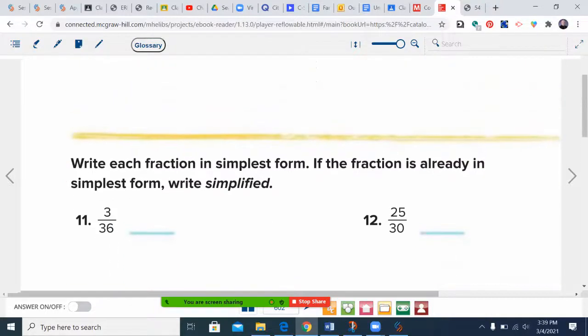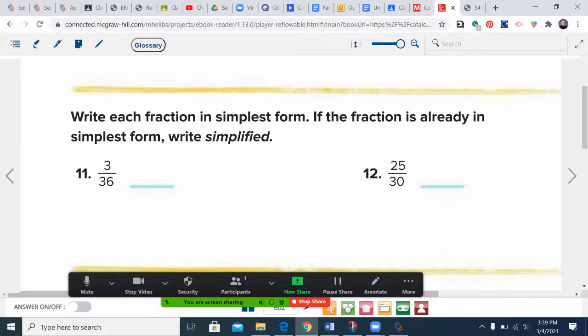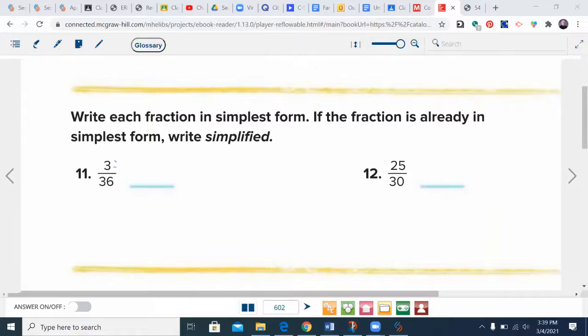Write in simplest form. For 3 over 36, I immediately say, okay, what are my common factors? Three is 1 and 3; 36 has 3 times 12. So I'll divide: 3 divided by 3 is 1, 36 divided by 3 is 12. The answer is 1 over 12.